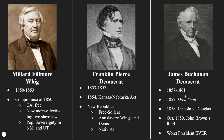Millard Fillmore is president when we get the Compromise of 1850. This compromise brings California into the Union as a free state. It establishes a new, more effective fugitive slave law — firming up the idea that states and people who find runaway slaves are forced to return them. The compromise also allows New Mexico and Utah to come into the Union and decide for themselves whether they will be slave or free. The Mason-Dixon line is no more — this idea of popular sovereignty means the people in that state will vote to decide.